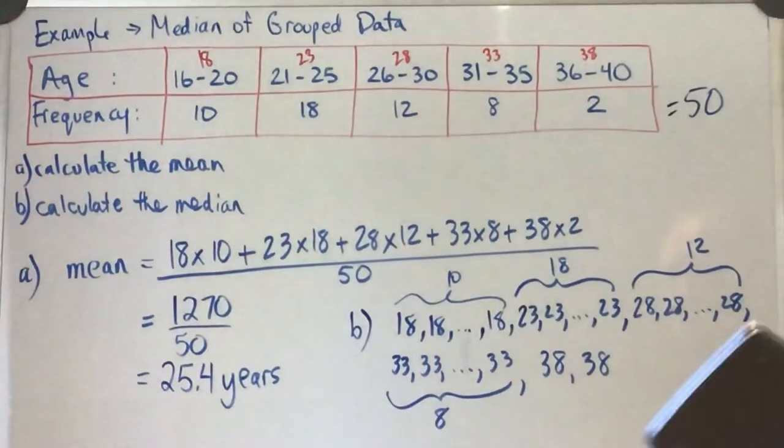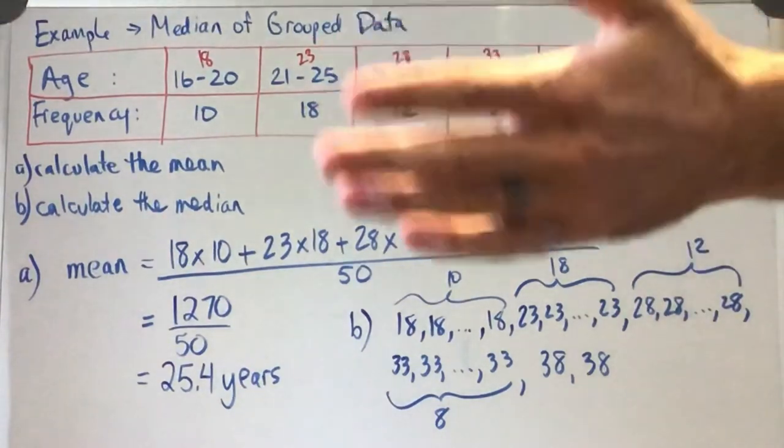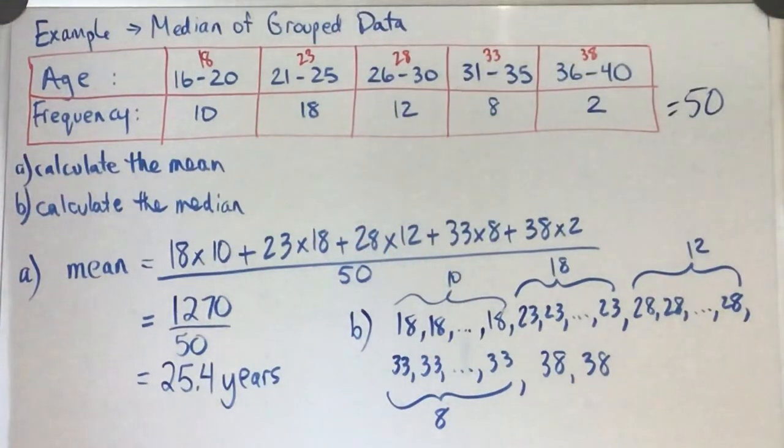So if we're trying to find the median value, if we had taken the time to list all 50 entries—which you could do—we're trying to find that middle entry. So we know, with it being 50 entries...